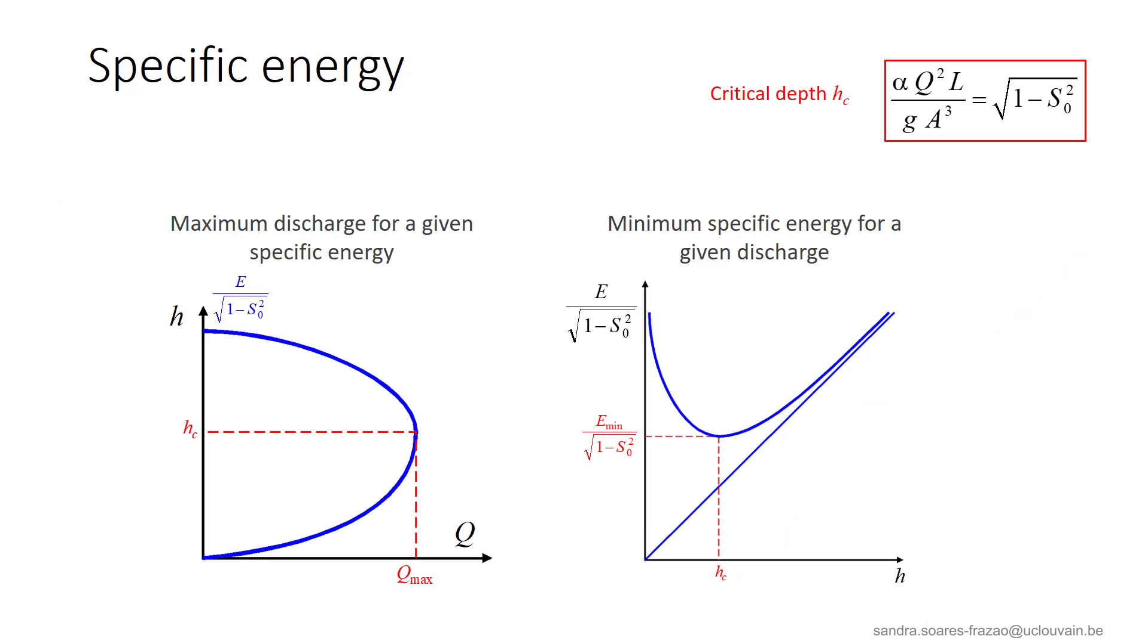So, in this lesson, we have discovered the concept of specific energy. From there, we have introduced the critical depth, that is the depth providing the maximum discharge for a given specific energy, or the depth that minimizes the specific energy for a given discharge. So, this depth represents a kind of most efficient flow, by contrast with the normal depth of the uniform flow, that represents an equilibrium situation. These two important depths will be discussed further in the next lessons. Goodbye!